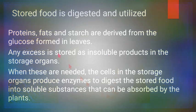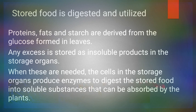Glucose is also used as a substrate in respiration. Protein, fats, and starch are all derived from the glucose formed in leaves. Any excess glucose is stored as insoluble products in storage organs. When needed, cells in the storage organs produce enzymes to digest the stored food into soluble substances that can be absorbed by the plant.